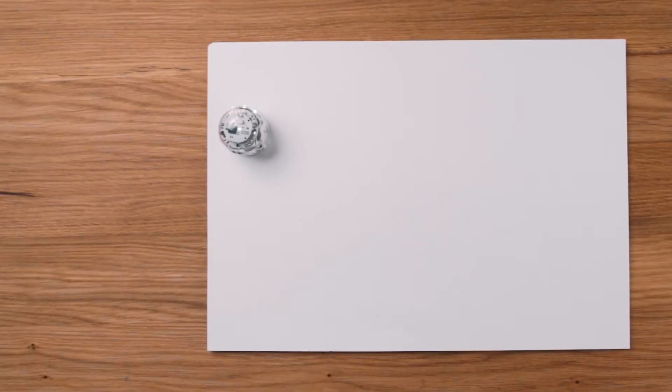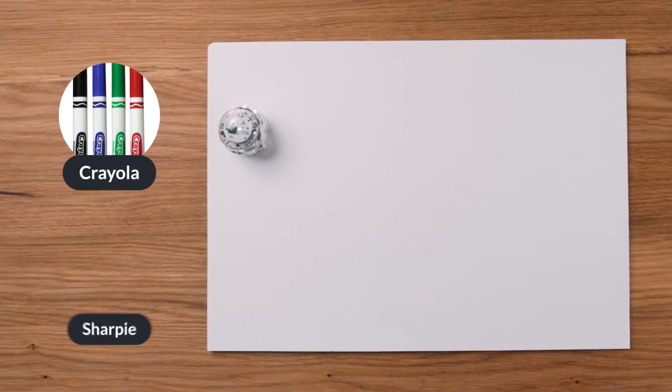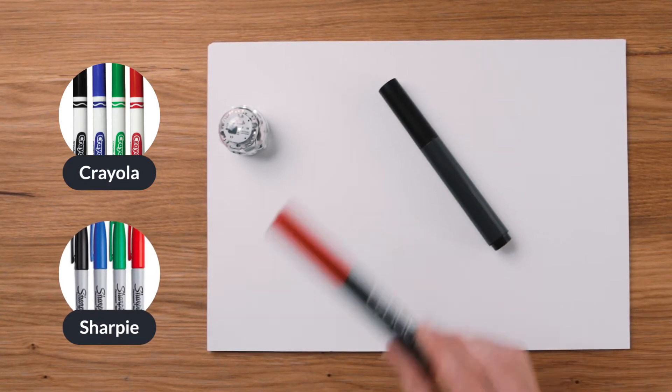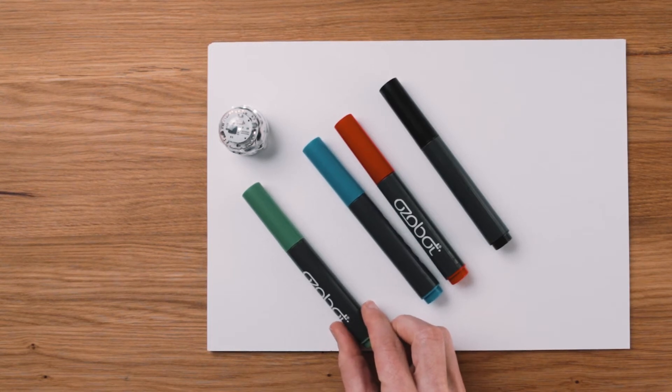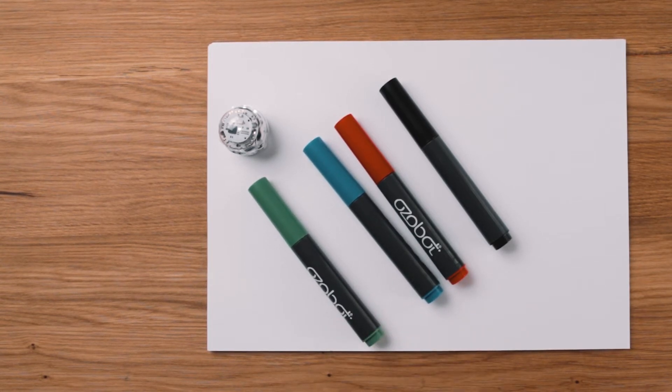If you don't have Ozobot markers, you can use classic Crayola markers or Sharpie wide chisel tips with the same shades of red, blue, and green. Dry erase markers are not recommended. Dry erase ink can get inside Evo and damage its parts.